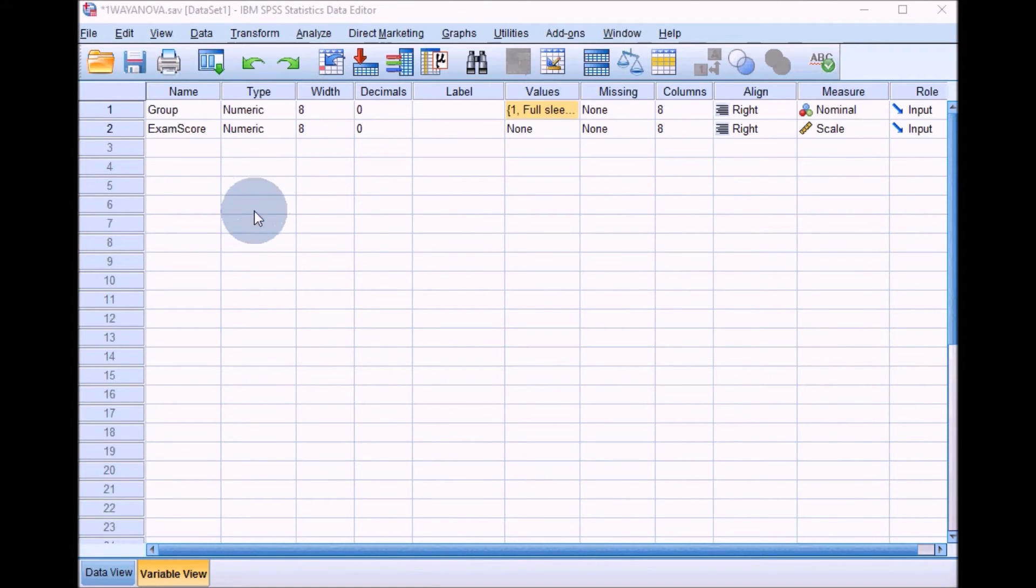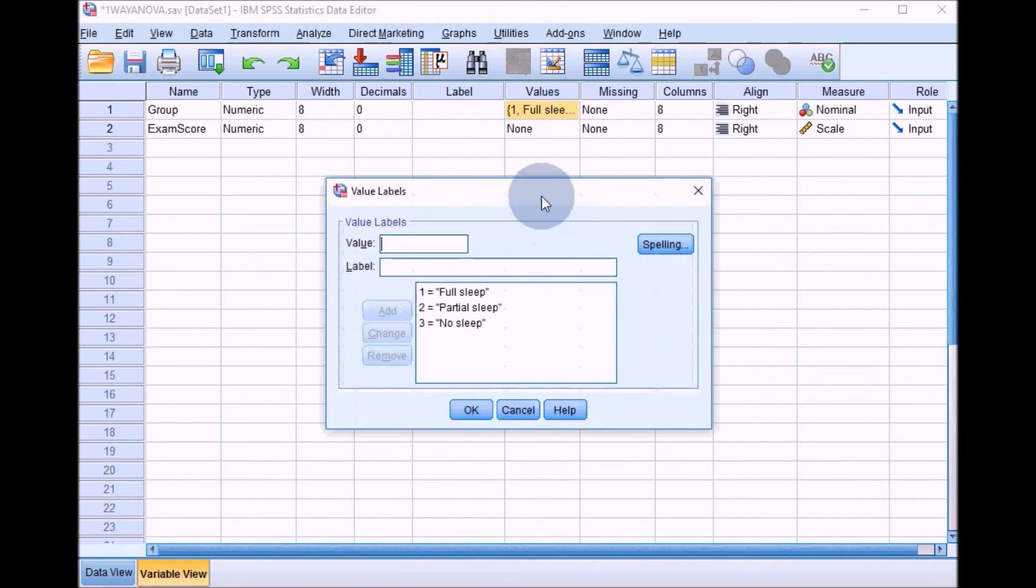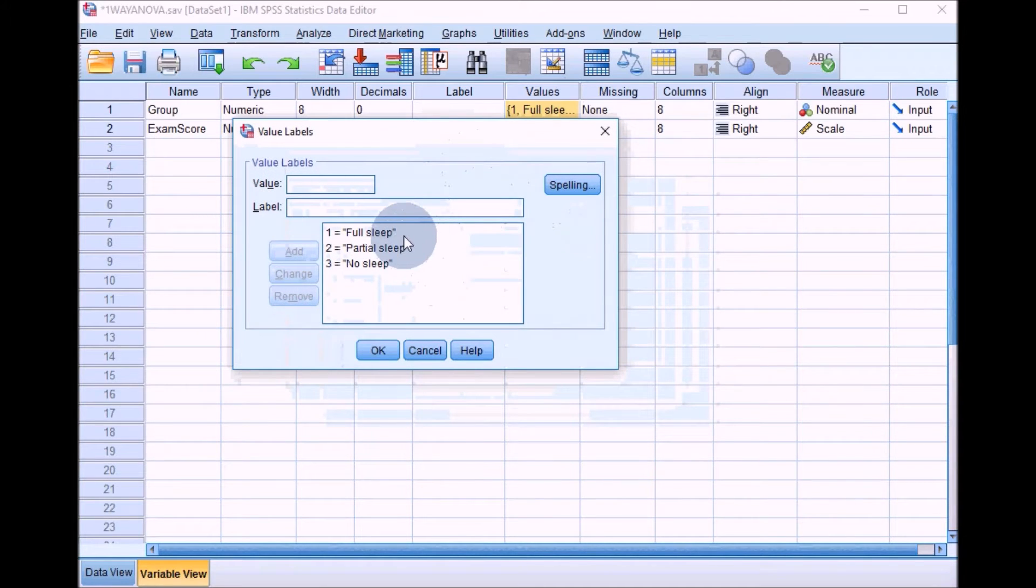I've got some data here which is similar to the data we had for the independent t-test. The experimenters wanted to look at three groups - the effects of getting a full night's sleep versus getting no sleep on exam score. They also included an extra group, group two, where the participants had partial sleep. They were woken up in the middle of the night, so didn't get a full night's sleep but got more than the no sleep group.